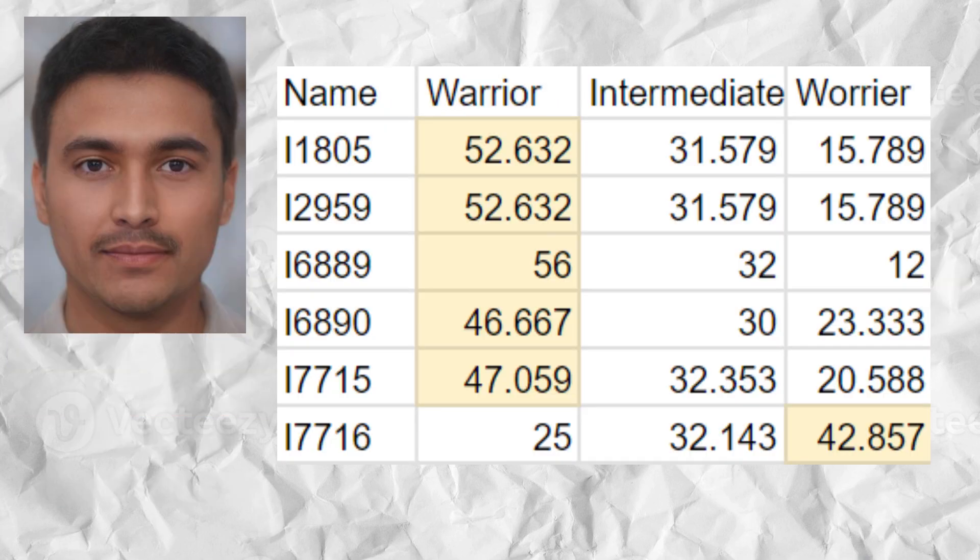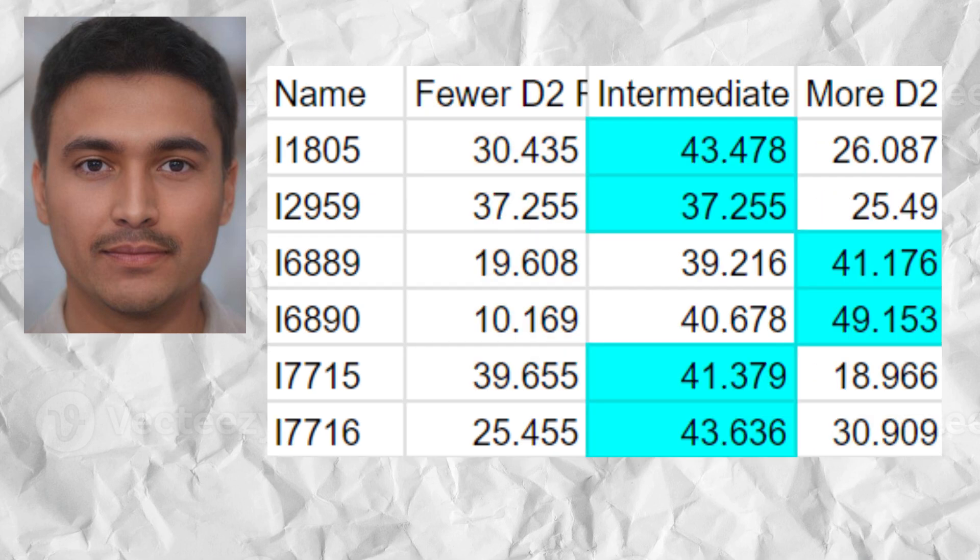The samples had a strong predisposition to the Warrior Phenotype, which is characterized by high activity of COMT, MAOA, and MAOB enzymes, low dopamine levels, and high ability to tolerate stress. Two of the six samples had a predisposition to higher availability of D2 receptors, and no samples had a predisposition to lower availability of D2 receptors, so overall the samples were predisposed to higher D2 receptor availability.